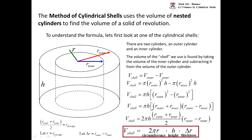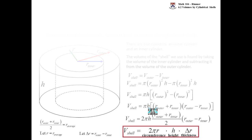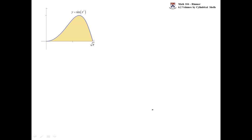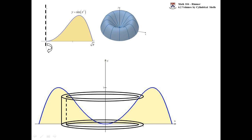Now we take infinitely many of these shells to get the volume of an entire shape generated by revolving a region. Back to y = sin(x²): instead of drawing a rectangle perpendicular to the axis like disk and washer, we draw a rectangle parallel to the axis of rotation — the y-axis. That generates a shell, and we know how to find the volume of that shell.